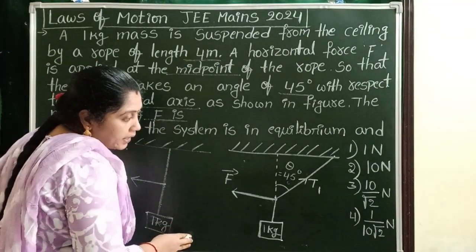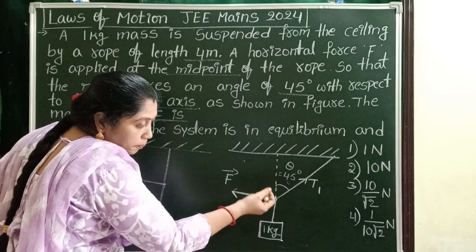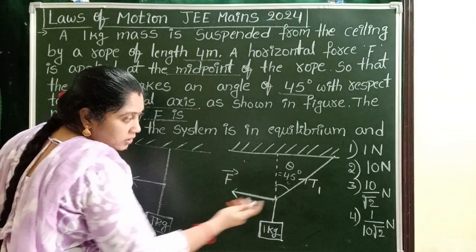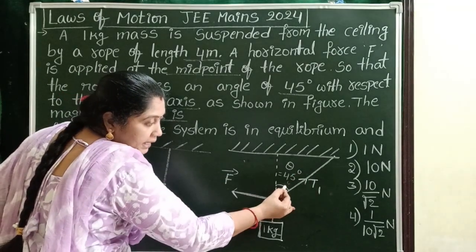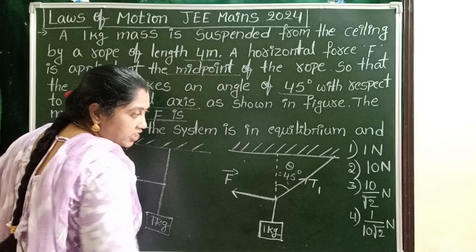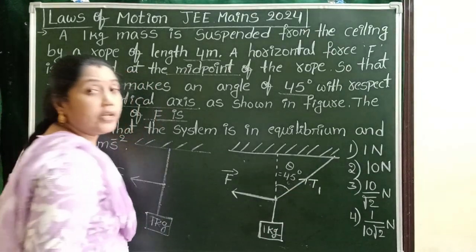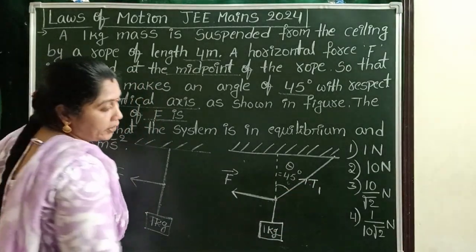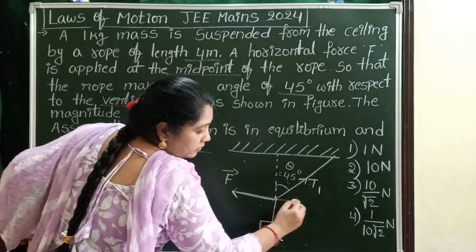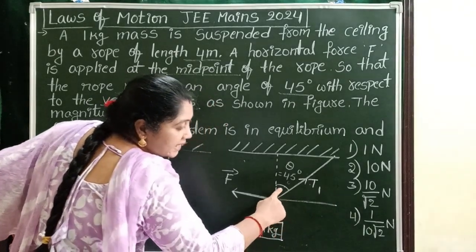So observe the given diagram. When this rope is pulled from the midpoint, this rope makes an angle theta with the vertical direction. This tensile force is resolved into two rectangular components. Here the angle is theta.